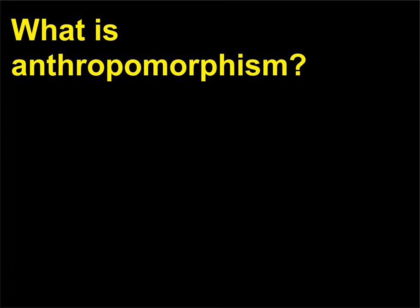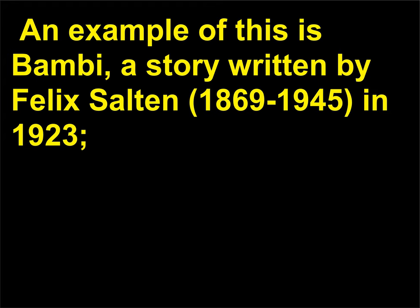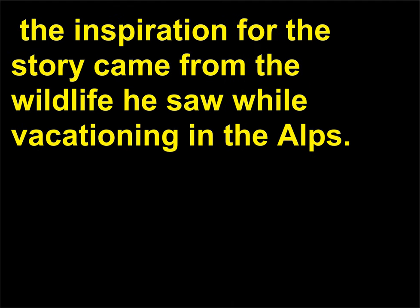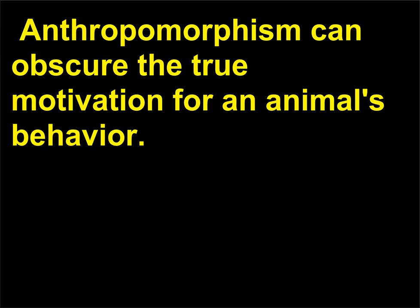What is anthropomorphism? Anthropomorphism is the attribution of human characteristics and feelings to non-humans. An example of this is Bambi, a story written by Felix Salten (1869–1945) in 1923. The inspiration for the story came from the wildlife he saw while vacationing in the Alps. When the story was eventually made into a Disney movie, Bambi had become a talking animal, complete with human feelings and emotions. Anthropomorphism can obscure the true motivation for an animal's behavior.